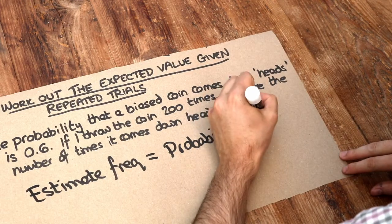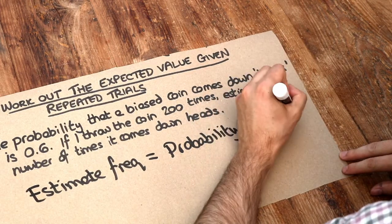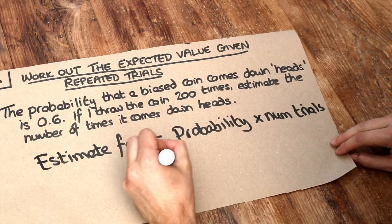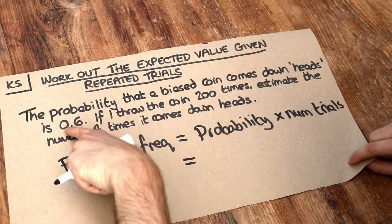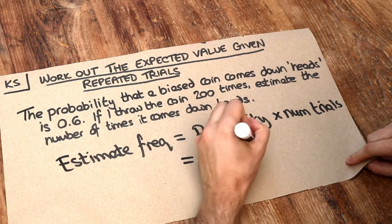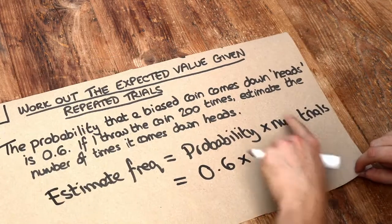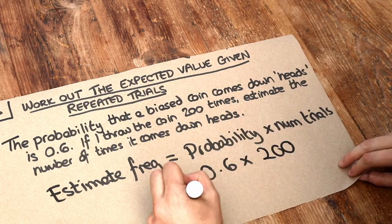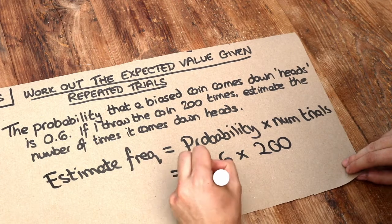times by the number of trials. The number of times in this case we're throwing the coin. So for this particular problem we've got the probability which is 0.6 and we're timesing it by the number of trials. The number of times we threw the coin was 200, and that gives us 120.